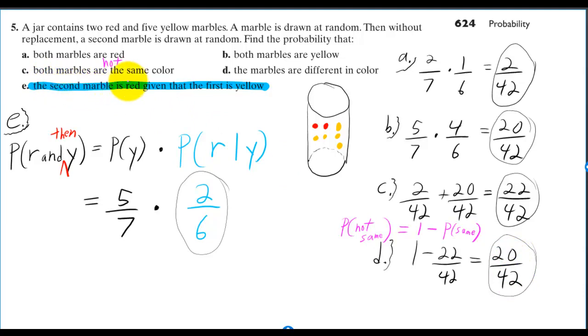When they ask for the probability that the second marble is red, given that the first is yellow, and you wrote five out of seven times two out of six, I messed up when I told you you were doing a great job, because the answer there is just two out of six. They're not asking us to find the probability of red and yellow, which actually means the probability of red and then yellow.